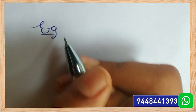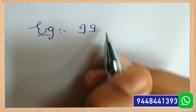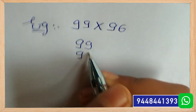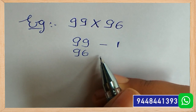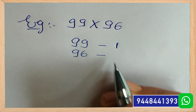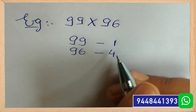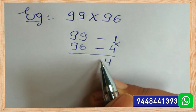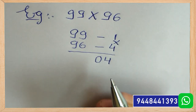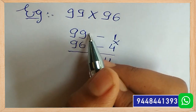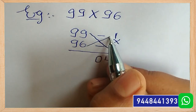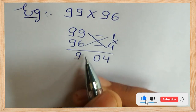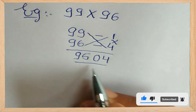For example, 99 into 96. First, take the difference of two digits with 100. Here, 100 minus 99 is 1 and 100 minus 96 is 4. Multiply 1 into 4, that is 4. As we are taking a two-digit number, we have to add 0, making it 04. Next, take 99 minus 4 or 96 minus 1 — both give the same answer, that is 95. So the total answer is 9504.